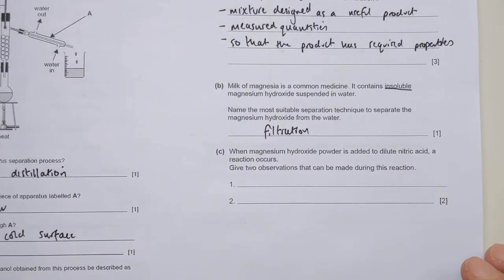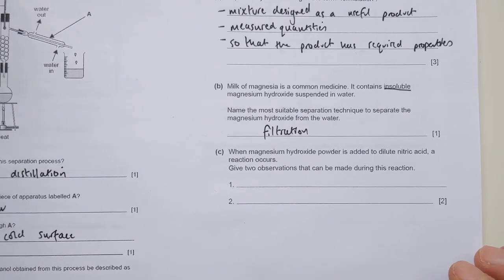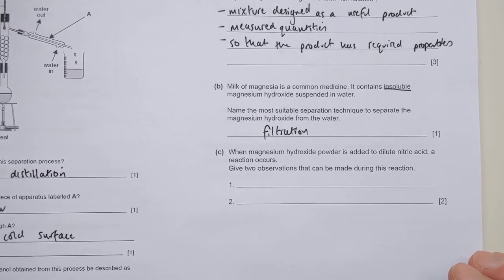Filtration is the technique we would use because it's insoluble. If it was soluble, we couldn't filter it. We'd have to evaporate. But filtration is the easiest way to get this separated here.